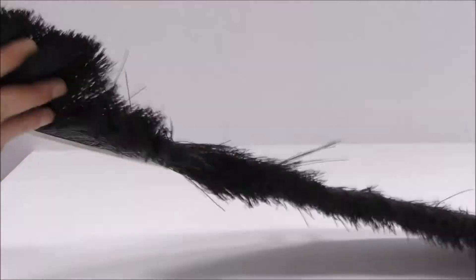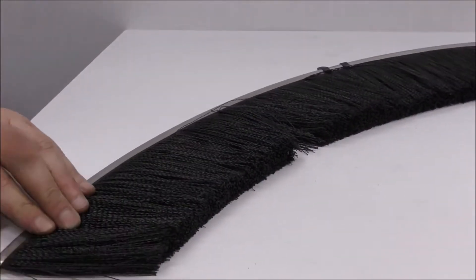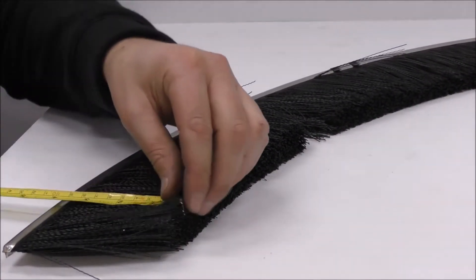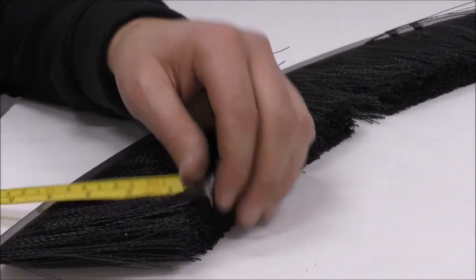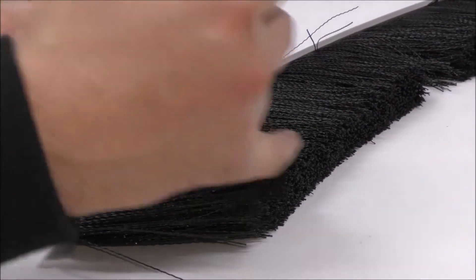Now I'm looking at the strip brush. As you can see here, I'm going to figure out what the bristle length is. Bristle length, as you can see, is 100 millimeters. That's the bristle length only, so only the black part, the bristle which is protruding from the strip backing.